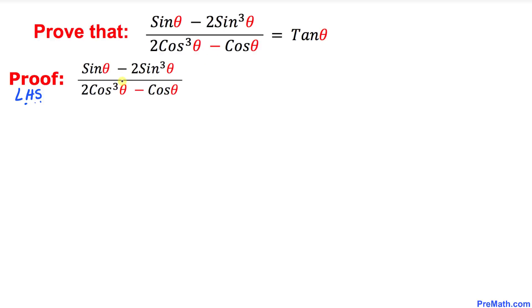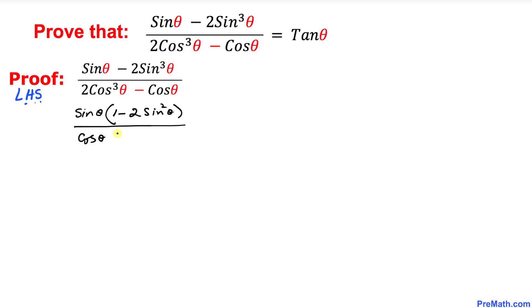Now let's go ahead and simplify this fraction. On the numerator we can factor out sin theta because that is in common. So if we factor out sin theta, we end up with 1 minus 2 sine square theta on the numerator. Likewise in the denominator, cosine theta can be factored out, giving us 2 cosine square theta minus 1 inside the parentheses.